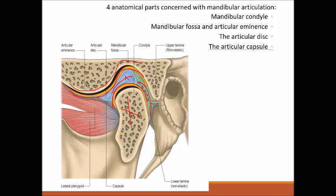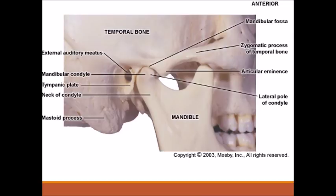The posterior part of the disc is divided into two laminae called the bilaminar zone — an upper zone and a lower zone — and these zones are highly innervated. Anteriorly, the disc is attached to the lateral pterygoid muscle, and the lower part of the disc is attached to the head of the condyle. The upper part is attached to the anterior surface of the articular eminence. This is the general anatomy of the temporomandibular joint.